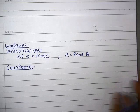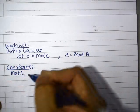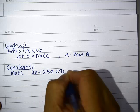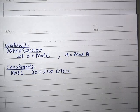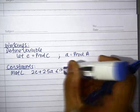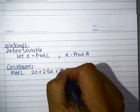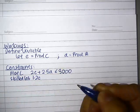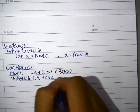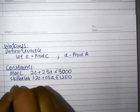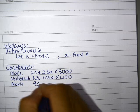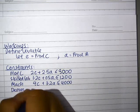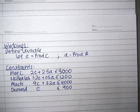I believe you remember what we explained as constraints in class. We have constraint in Material L where 2C plus 2.5A does not exceed 3000. For Skilled Labor, 1.2C plus 0.5A does not exceed 1200. For Machine, 4C plus 3.2A does not exceed 4000. And you've been told Demand C does not exceed 900.